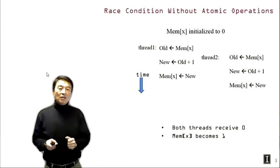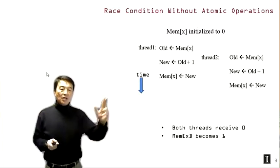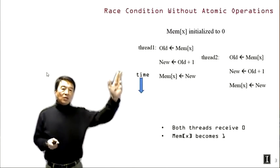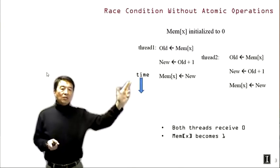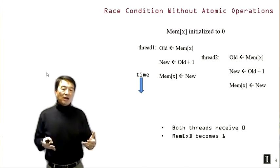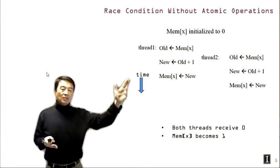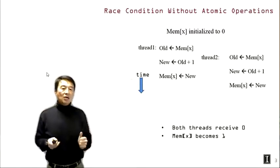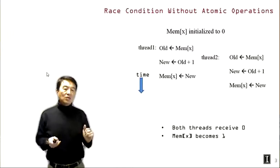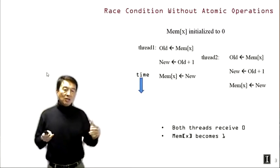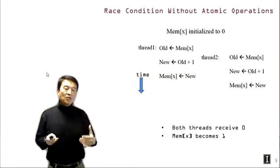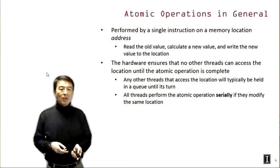This is a review slide from the previous lecture showing the race condition without atomic operations. This is an undesirable timing where we initialize memory location x as zero, and then thread one and thread two both try to update it by adding one to it. Both threads read the old value zero, and the memory location ends with value one rather than two, which should have happened if we properly reflected the updates from both threads.